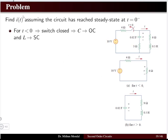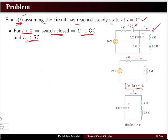Let us solve a problem to understand the second order series RLC network. Determine i(t) assuming the circuit has reached steady state at t = 0⁻. For t < 0, the switch is closed — the capacitor is open-circuit and inductor is short-circuited. The current is 10V / (4 + 6) = 1 A. The capacitor voltage equals the voltage across the 6-ohm resistor: V(0⁻) = 6 × 1 = 6 V.